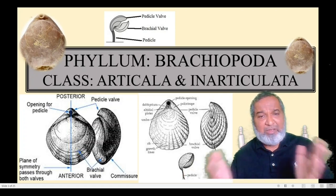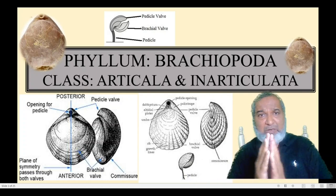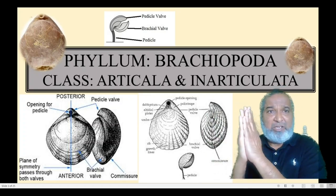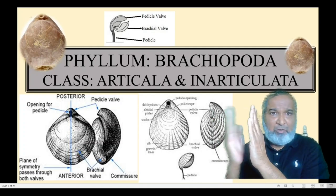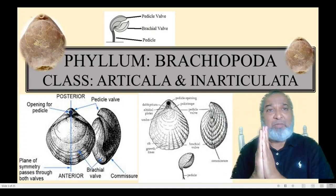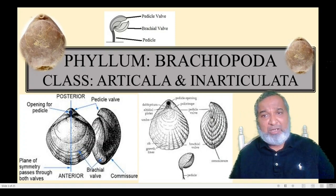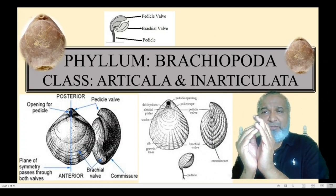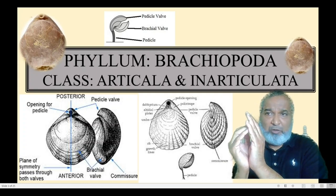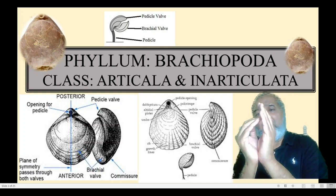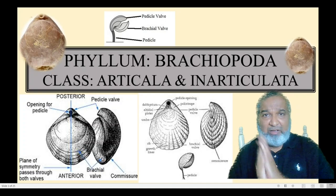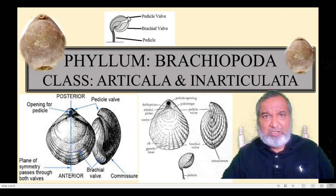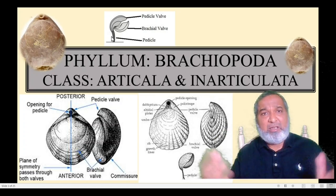Brachiopoda contains two shells. In Lamellibranchia there are also two shells, but in Lamellibranchia if you join your two hands they are exactly similar — left valve and right valve exactly matched, so Lamellibranchia are equivalved. But in Brachiopoda, as shown in the diagram, one wall is bigger and one is smaller. Wherever we have the pedicle opening, that wall is called the pedicle wall.